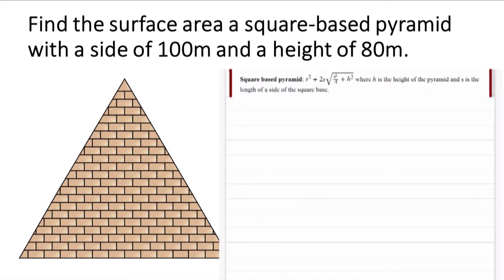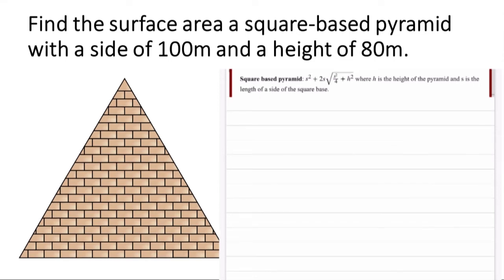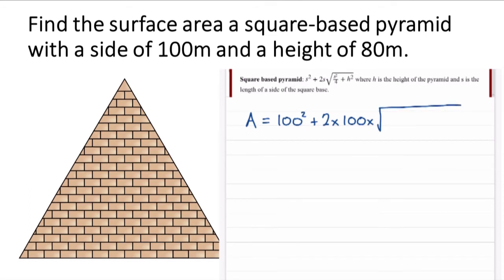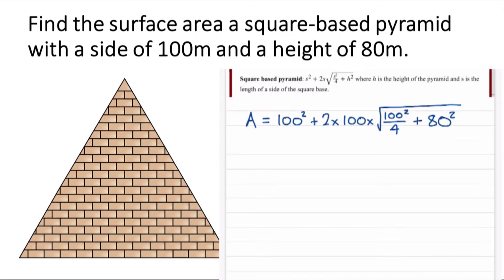So here we go. The area, which we'll call A, is equal to the side of the square squared, which is basically the area of the base, isn't it? And then it's multiplied by two times s, which is a hundred in this case, times the square root of s² over four plus h², the height, which in this case is eighty meters. So we're working throughout in meters here. Okay, let's bring in the calculator and type in these figures.